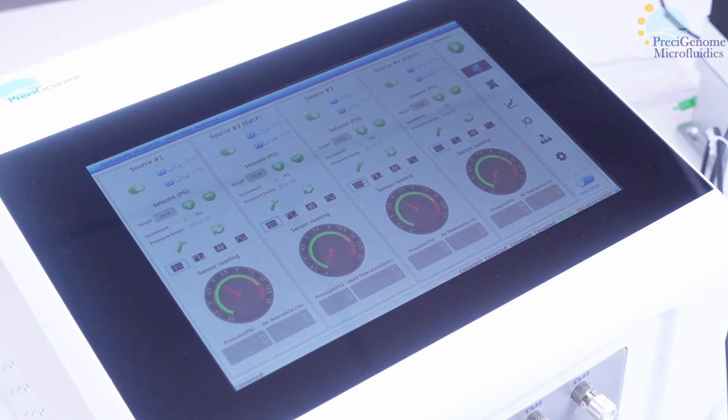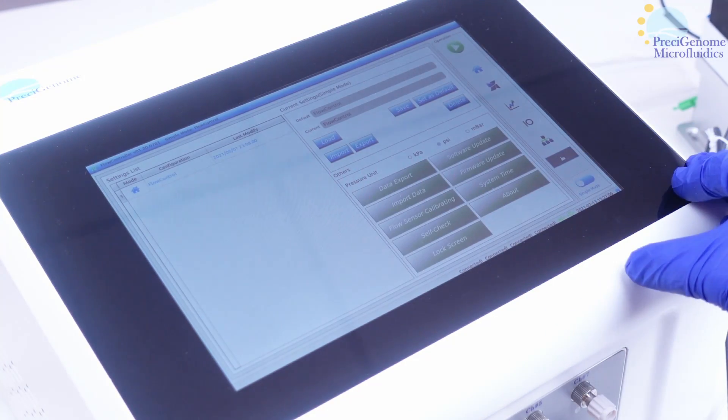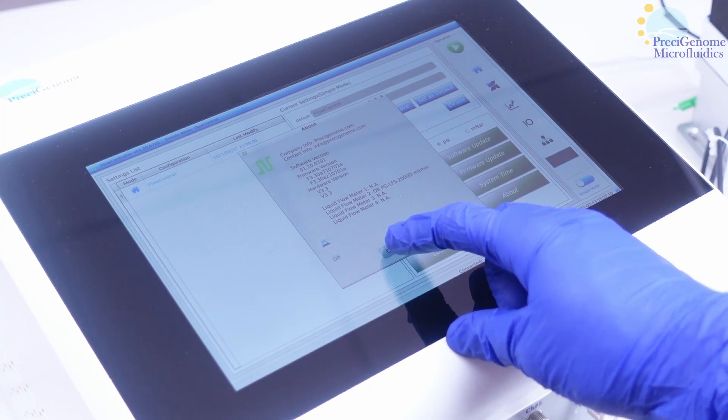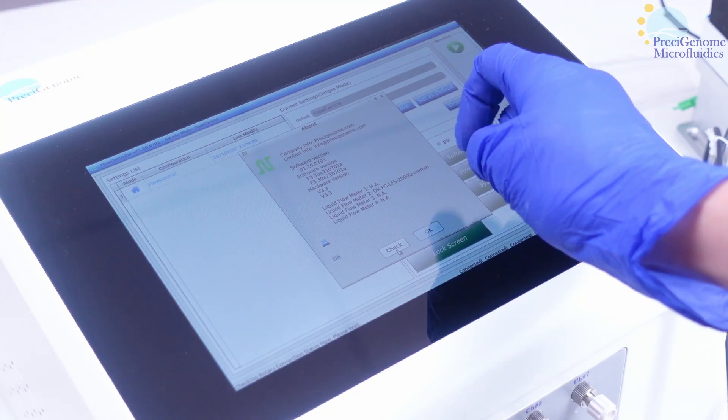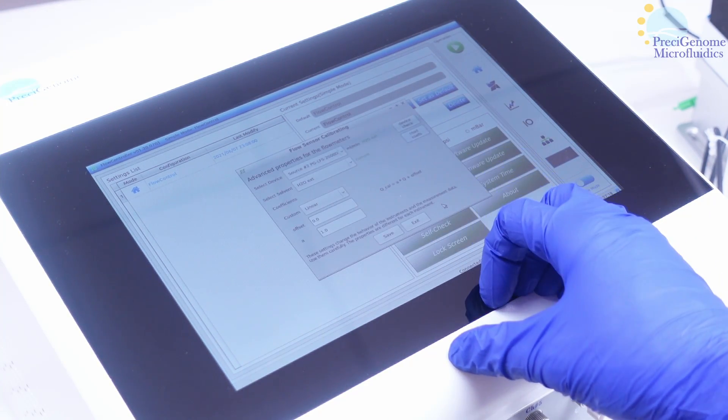After the flow sensor is connected, we'll still want to check that it was recognized. In the pressure controller home screen, go to General Settings, About, and Check. Your flow sensor model should be displayed on the appropriate channel. You may then proceed to calibrating your device.